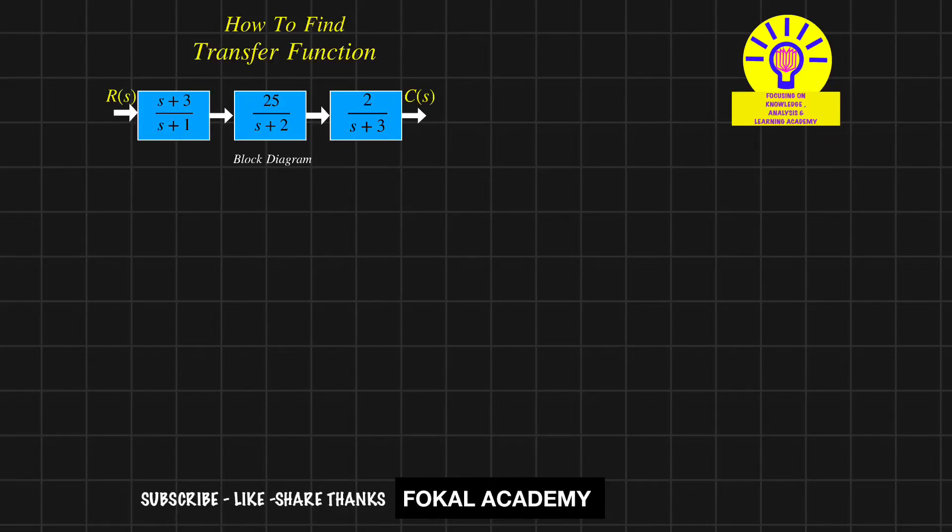See here in this problem, how to find the transfer function for the given block diagram. So here input is R of s and output is C of s. So here three blocks are cascaded to each other.